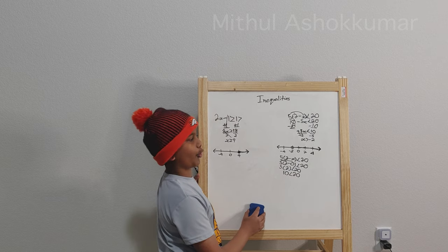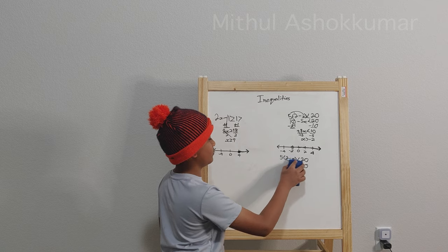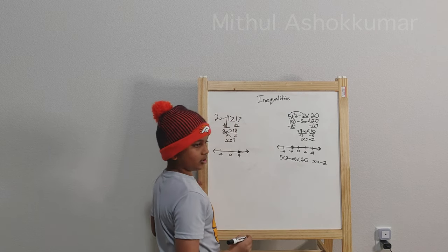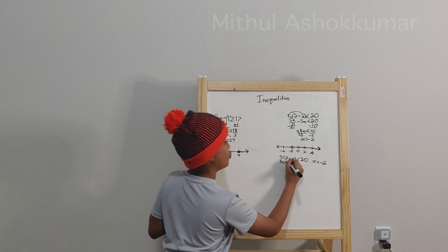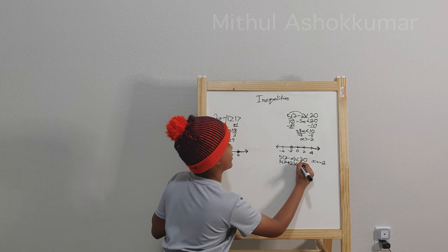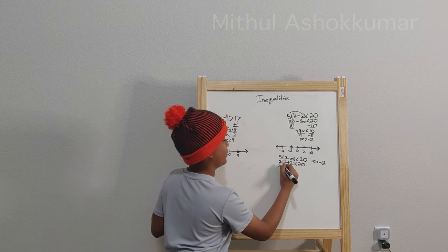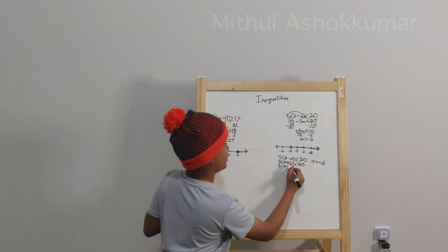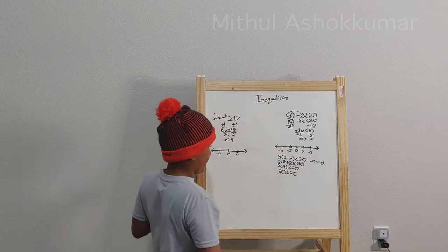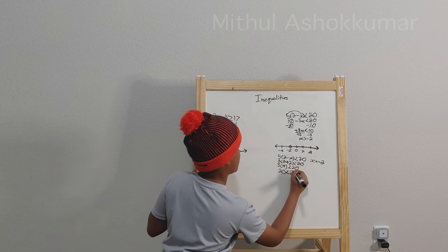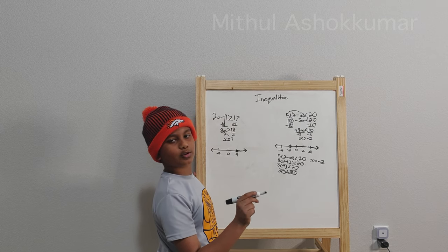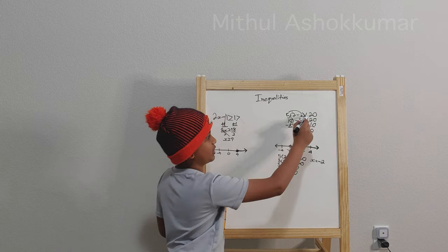But what about a value that does not work? Let's try negative 2, so x equals negative 2. We have 5 times (2 minus negative 2) — remember, a negative times a negative is a positive — which is less than 20. So we have 5 times 4 — do parenthesis first before multiplying — which is less than 20. 5 times 4 is 20. Is 20 less than 20? Nope. 20 is not less than 20; 20 equals 20. If we had less than or equal to, the statement would be true, but because we're working with strictly less than, it doesn't work.